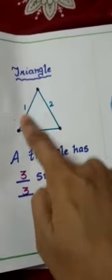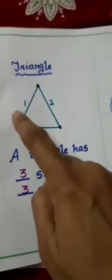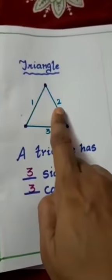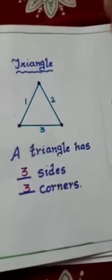A triangle has three sides: first side, second side, third side.